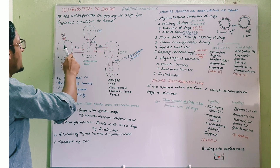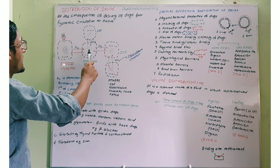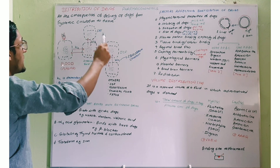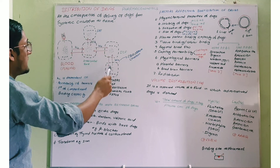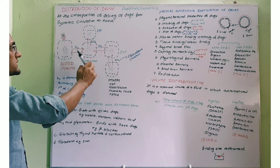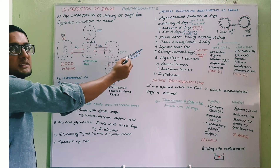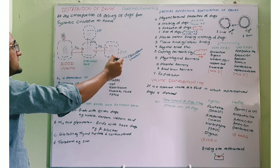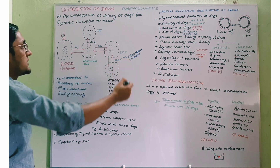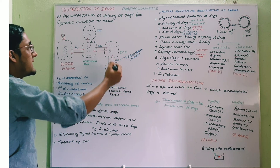From this compartment, the free drug goes to the next compartment, then transfers to the next and finally there is formation of one equilibrium state in all compartments. This is called the equilibrium constant, which is denoted by Kc.